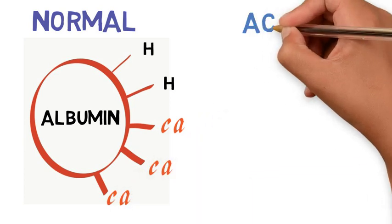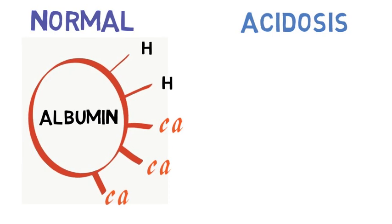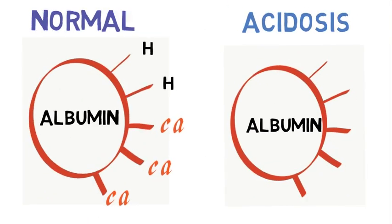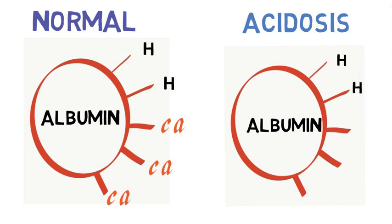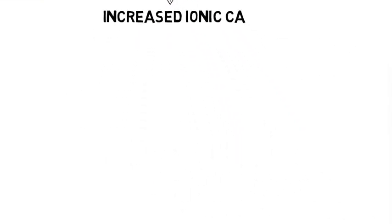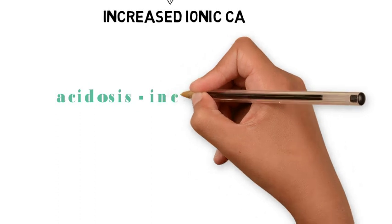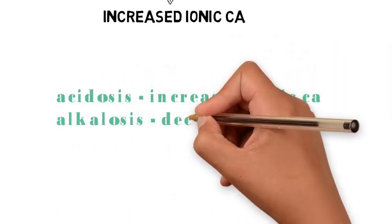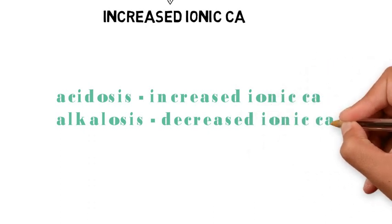Whereas in acidosis, there is increased hydrogen, so there is less binding of calcium to albumin. This results in increased ionic calcium. So in acidosis there is increased ionic calcium, whereas in alkalosis there is decreased ionic calcium.